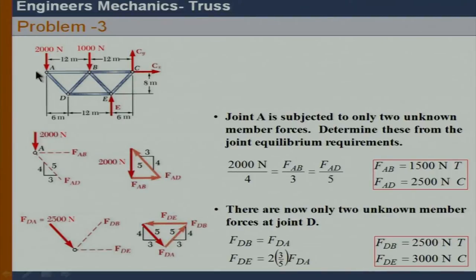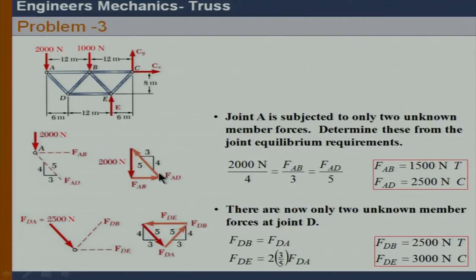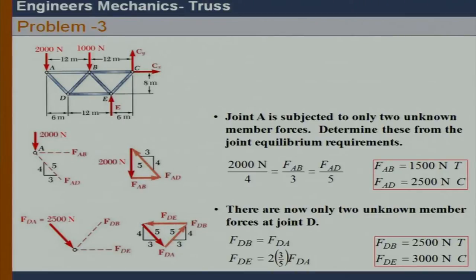For joint A, we have two unknowns and can immediately create a force triangle. There is a two-thousand Newton force; constructing the force triangle with FAB and FAD closes the triangle so the resultant force is zero. Using the law of sines, we get the values of FAD and FAB. This graphical approach is an alternative — it is just joint equilibrium expressed as sum of forces along X equals zero and sum of forces along Y equals zero.